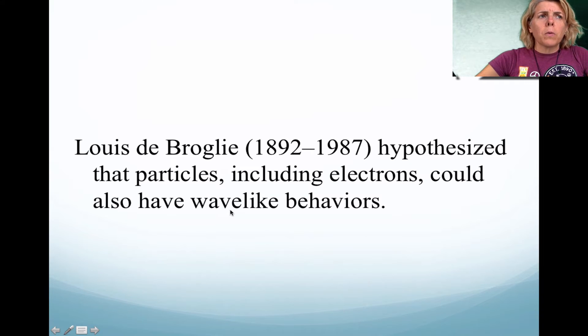So the Bohr model was okay. It wasn't great. He could not explain the chemical properties of other elements. So as a result, the scientists had to keep searching. And Louis de Broglie was a man who decided, why can't we look at the wave-like behavior of the electron? They knew that from the photoelectric effect that the electrons could act like particles. Well, they thought, why can't the electrons act like waves?